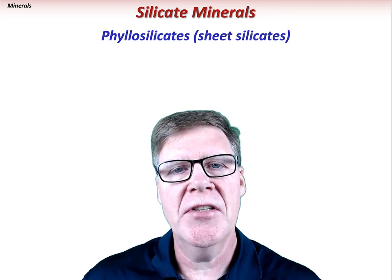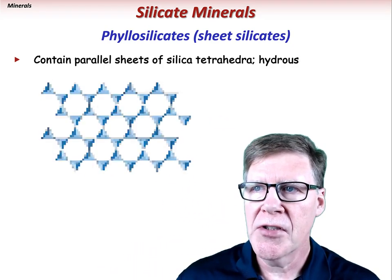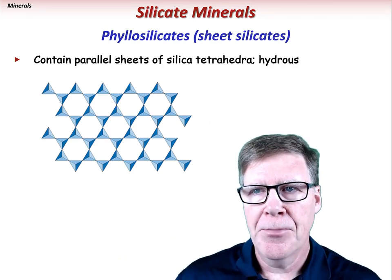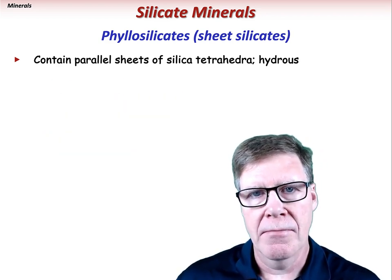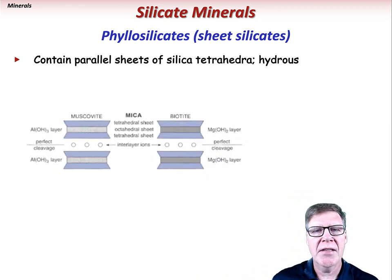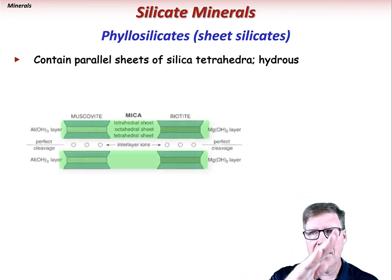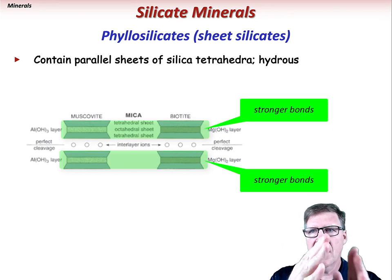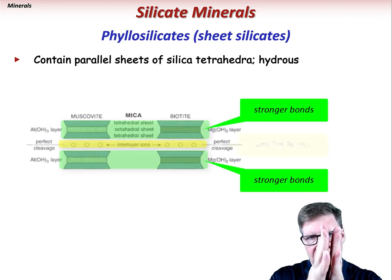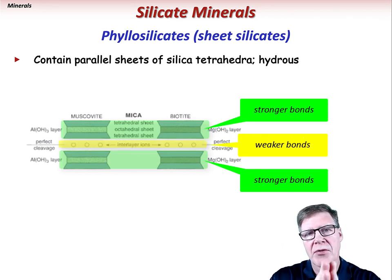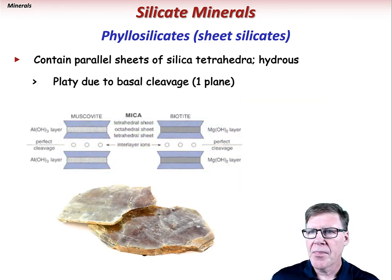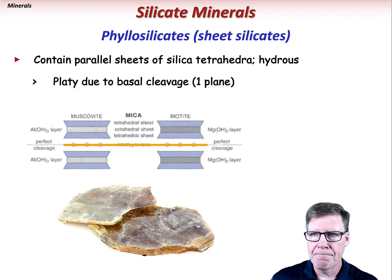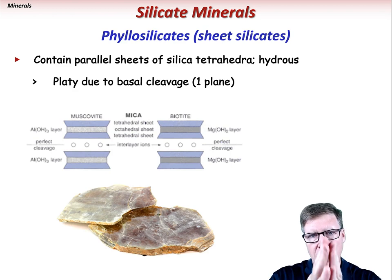Phyllosilicates are the sheet silicates and contain parallel sheets of silica tetrahedra. These minerals are also hydrous. The bonds connecting atoms within any given sheet are typically much stronger than the bonds connecting adjacent sheets. This gives the minerals the ability to peel apart, and thus these minerals have one preferred plane of cleavage called basal cleavage, and commonly break between the sheets.